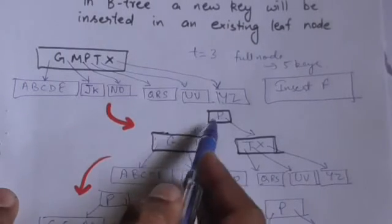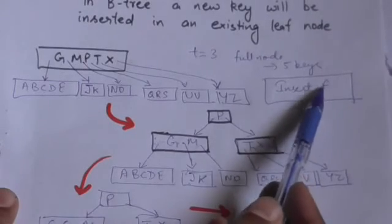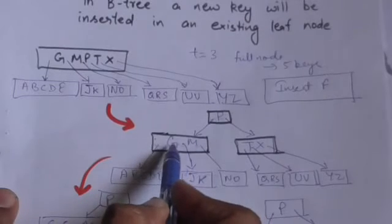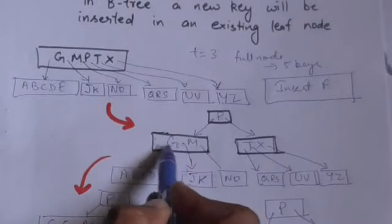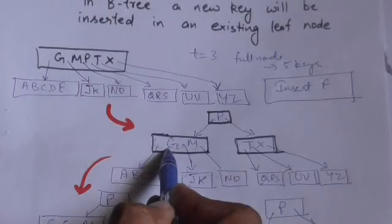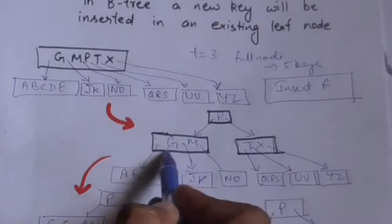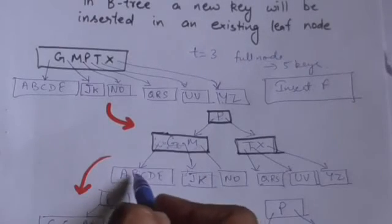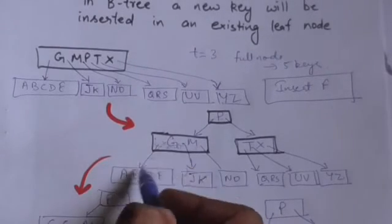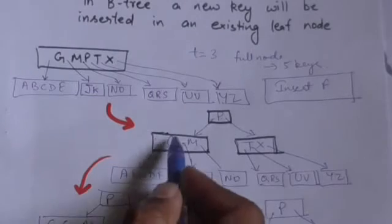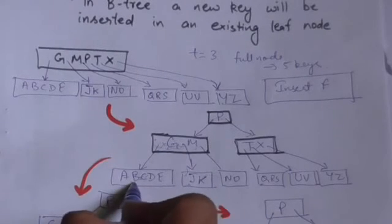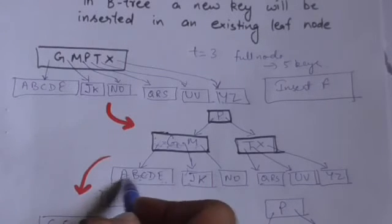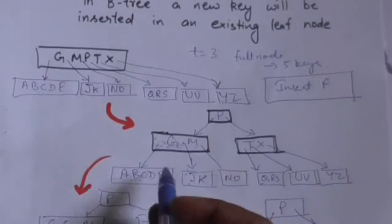We move to this node, which has 2 keys. Key F is smaller than key G, so we will move to the child of this node which is at the left of key G. That node has 5 keys, meaning it is full, so we will split this node.